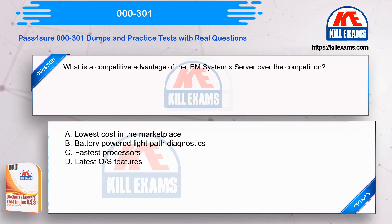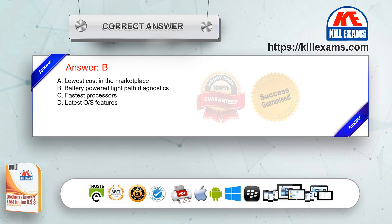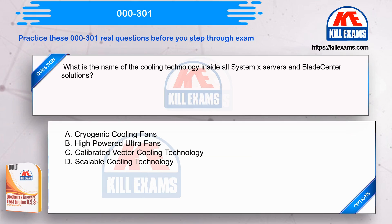What is a competitive advantage of the IBM System x server over the competition? Option A: lowest cost in the marketplace. Option B: battery-powered light path diagnostics. Option C: fastest processors. Option D: latest OS features. The correct answer is Option B.